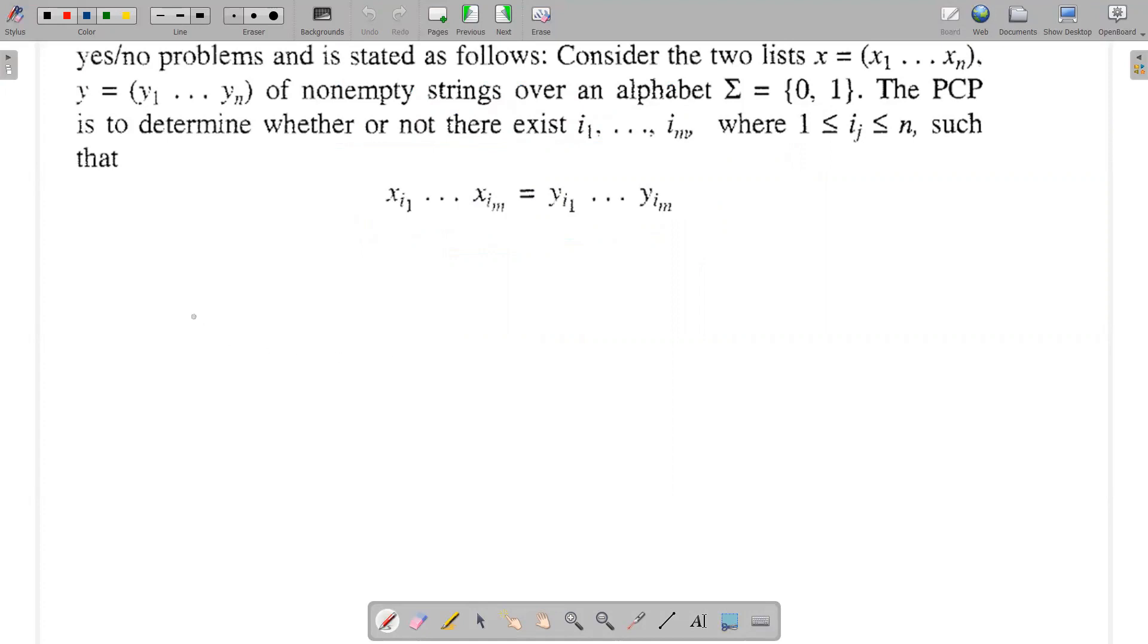We have two lists, list x and list y. List x is divided into certain parameters x1, x2, x3, x4. Similarly, y is also a list divided into parts y1, y2, y3, and y4. These are two non-empty sets of strings, so they are filled up.